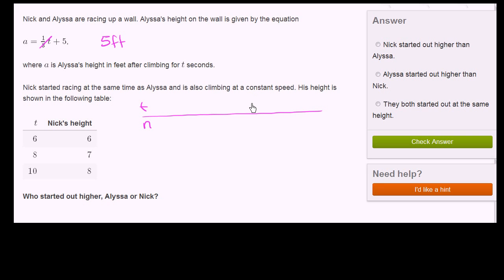We already know that at time 6 seconds, or after 6 seconds, he's 6 feet in the air along the wall. At time 8, he is 7 feet in the air or along the wall. And at time 10, he has gotten to a height of 8 feet. So what's happening here?